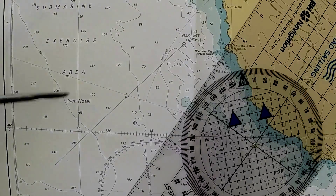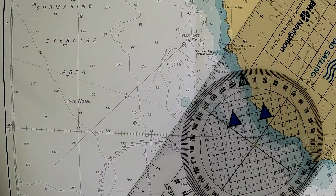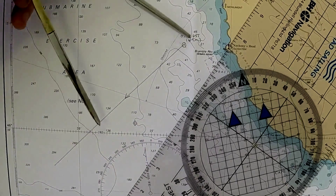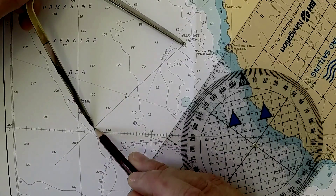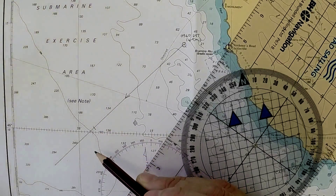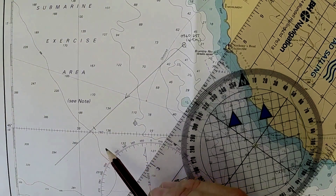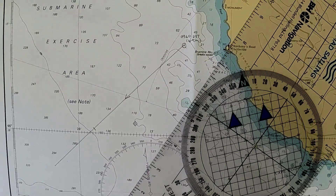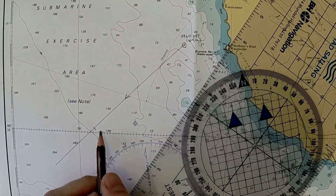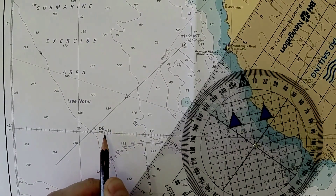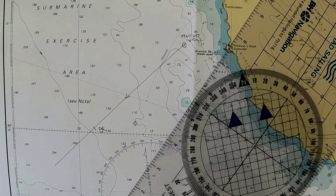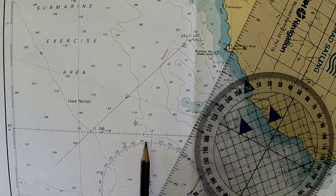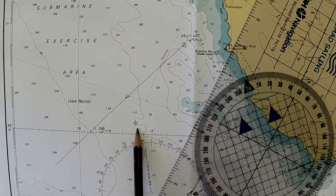Transfer that to the water track we've drawn. This is the first part of the EP — it's our position in the water, where we'd be if there was no tide influencing the boat. It's called a dead reckoned position, or DR.